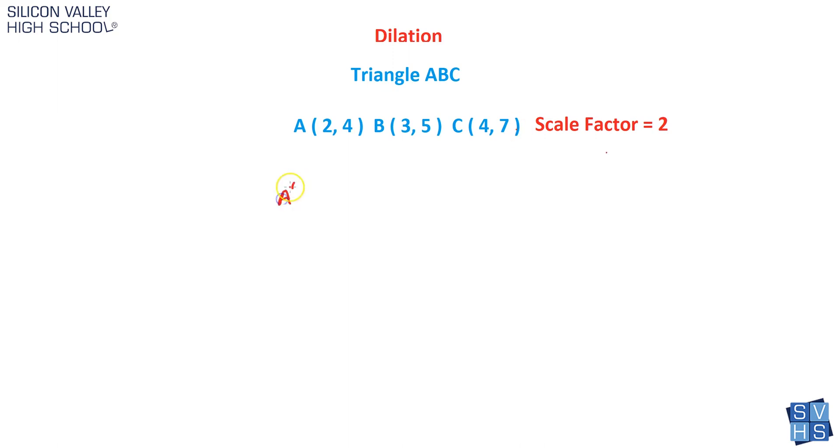So your new A prime, that's kind of what we designate as the new A after the dilation, would be times 2. All it is is 4, 8. I did 2 times 2 and 4 times 2. B prime would be multiply both guys by 2. So that would be 6, 10. And then C prime, the new C for the new triangle after the dilation, would be times 2 times 2. So that would be 8, 14.